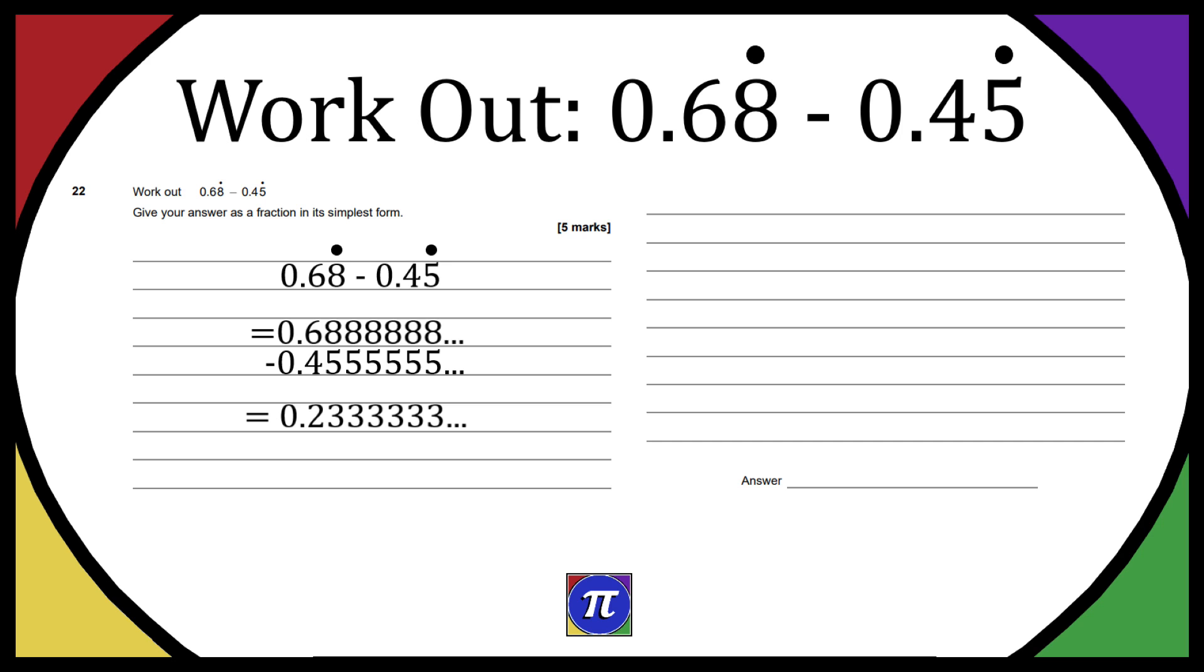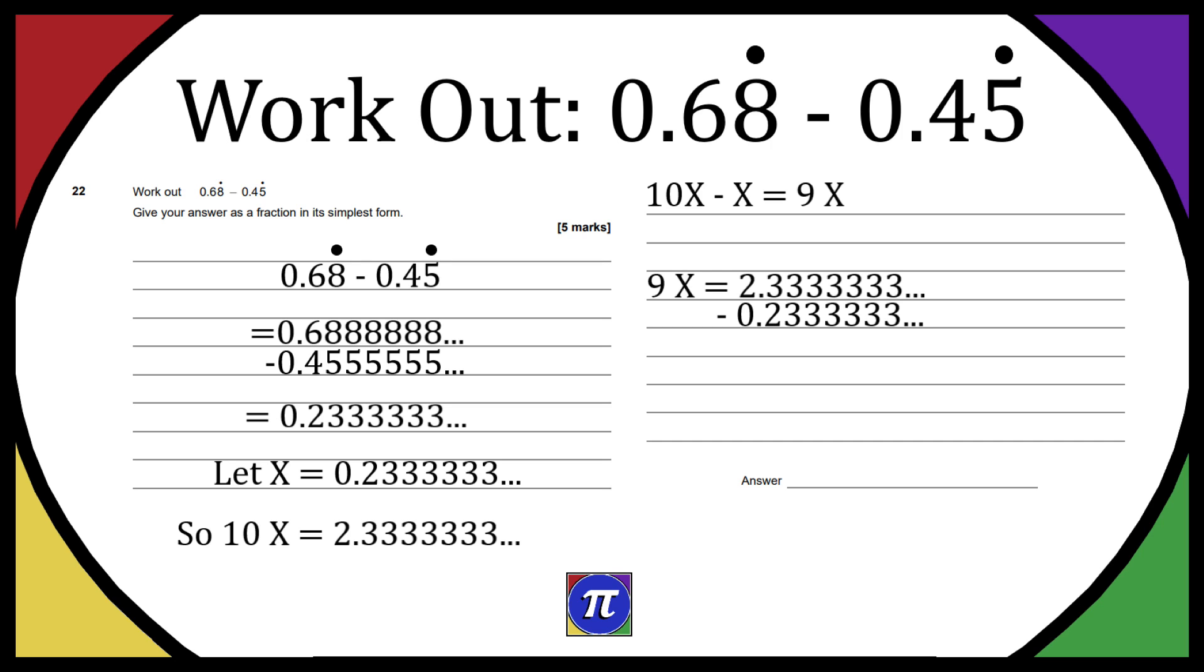So now we have the answer, we're going to turn it into a fraction. We do this by letting x equal our answer, so x equals 0.2333 recurring. By doing this we get 10x equals 2.3333 recurring. Then from there we can do 10x minus x, which equals 9x. That 9x equals 2.3333 minus 0.2333, and as it's perfectly aligned we can see that the threes will cancel out. So 9x equals 2.1.